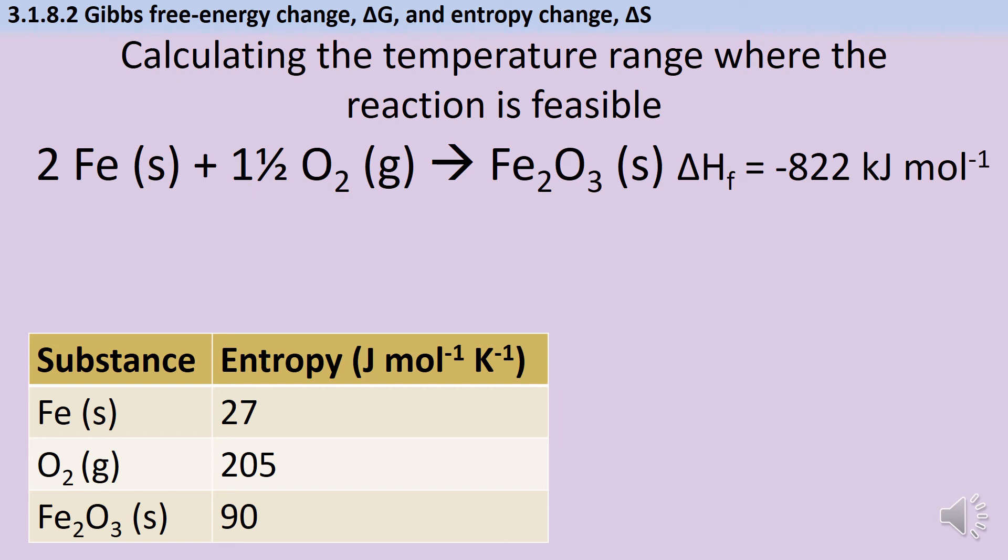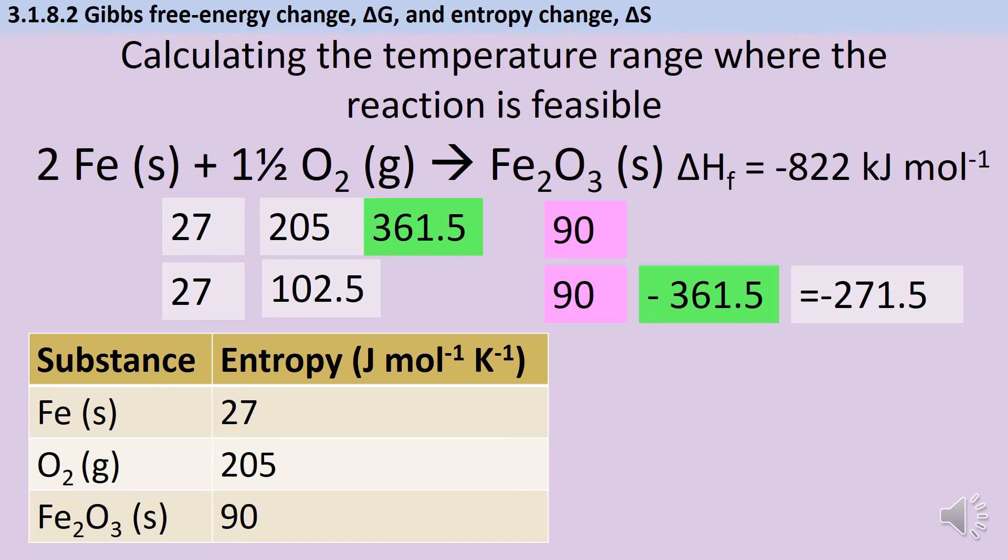As we did before, I need to start out working out the change in entropy by doing the entropy of the products take away the entropy of the reactants. Well my products are easy, I just have one mole of iron oxide, and then for my reactants I have two moles of iron and a mole and a half of oxygen which comes to 361.5. So 90 take away 361.5 gives me an overall ΔS value of minus 271.5, remembering of course that that is in joules per mole per Kelvin, not kilojoules per mole per Kelvin, so I am going to need to convert it before I do the next part of my equation.